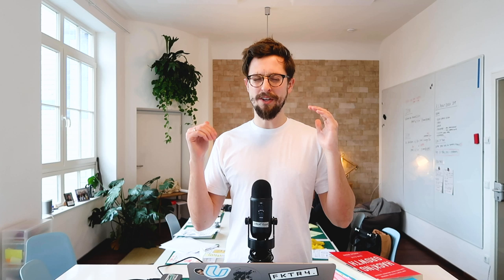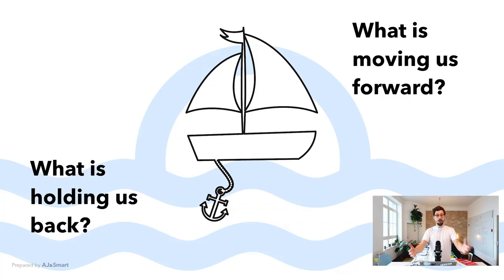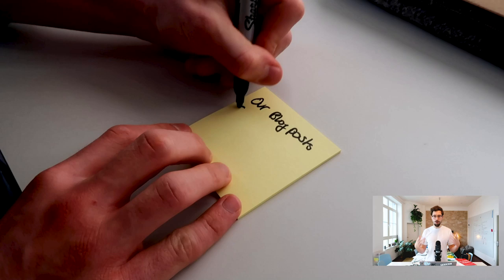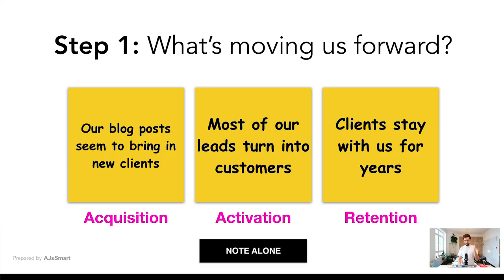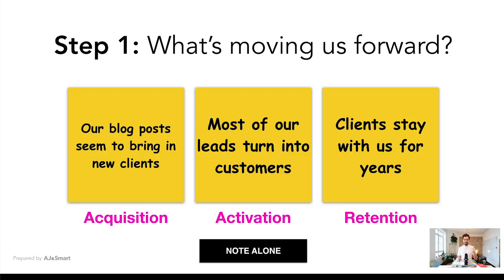The first thing we're going to do is called a sailboat exercise. I ask everyone to write about what's really pushing us forward — what's working well for us as a company when thinking about acquisition, activation, and retention. Everyone writes a few post-its on their own without discussing. Some examples would be: our blog posts seem to bring in a lot of new leads; most of our leads turn into customers; clients stay with us for years. Everyone on the team should try to write a few of these examples for each lever.